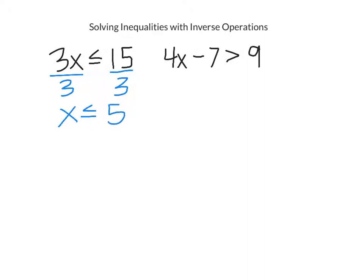In the second one, this one's a two-step inequality. So the x is being multiplied by 4, and then 7 is being subtracted from it. Inverse operations means we have to undo them in the reverse order. So I'm going to undo minus 7 by adding 7 to both sides. So then I have 4x is greater than 16, and then undo the multiply by 4 by dividing by 4. So x is greater than 4.